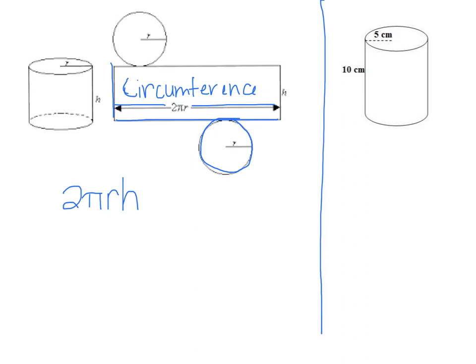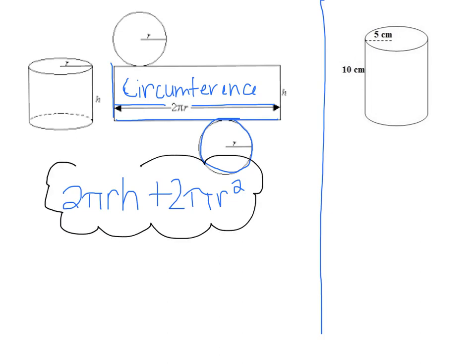That gives us the length times width of the rectangle. Now we just need to add on the area of the two circles. To find the area of a circle it would be πr², but there are two of them, so it's going to be 2πr². So to find the surface area of a cylinder, the formula is: 2πr times h, plus 2πr².